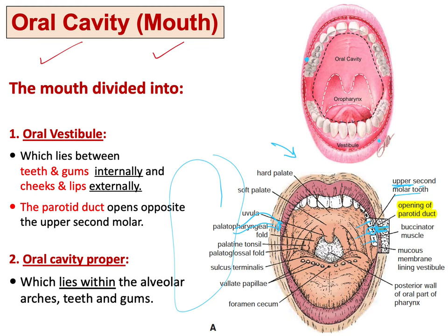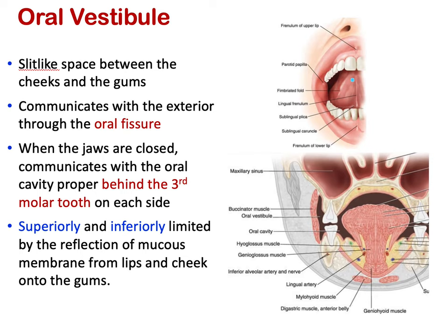Moving beyond the teeth and gum — either the lower or upper teeth and gum — you find alveolar arches, either the inferior or superior one. Going behind the teeth, gum, and alveolar arch, you find another space, which is the oral cavity proper.